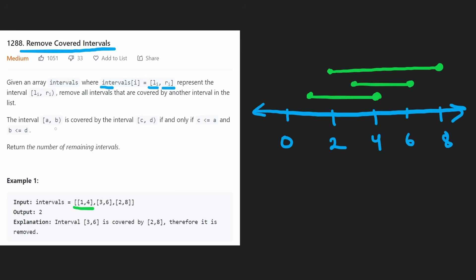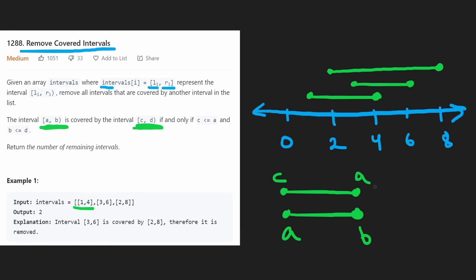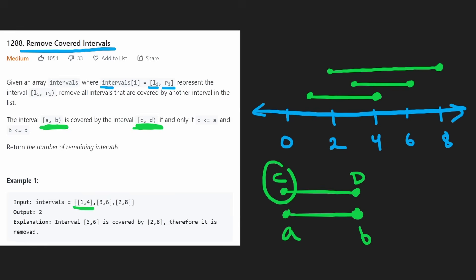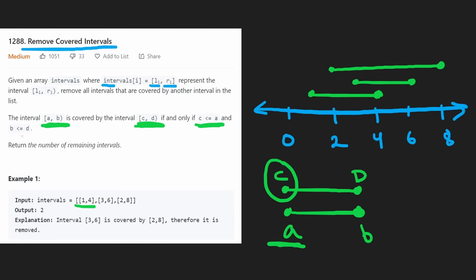An interval is defined as being covered by another one — let's say we had an interval a to b, and another interval c to d. This is an interval covering another one, because the c point is less than or equal to the a point and the d point is greater than or equal to the b point.